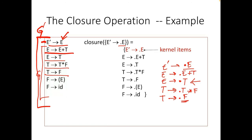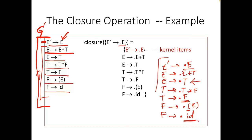For F, we have F to open-bracket E close-bracket, so we add F to dot open-bracket E close. Here after the dot we have a terminal, so we don't need to add anything further. We also have F to id, so we add F to dot id. Again, after the dot is a terminal, so nothing more needs to be added. This completes the closure of E dash to dot E.